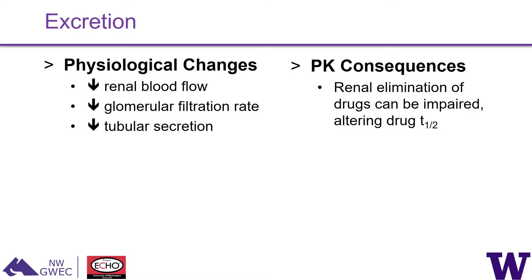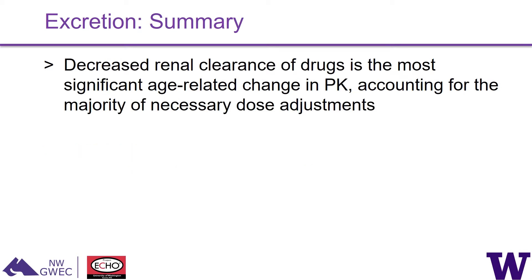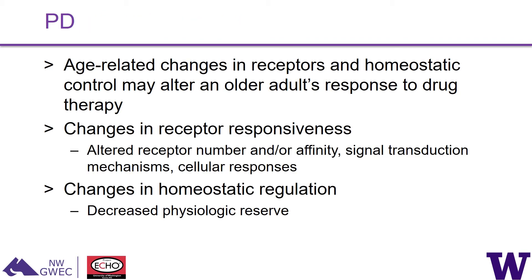Excretion is probably the most affected stage in PK. The take-home message is that renal elimination of drugs can be impaired, extending the drug's half-life — allowing it to accumulate and exert side effects. For example, digoxin's half-life is 38 to 48 hours in a healthy adult but averages 70 hours in older adults. Ranitidine dosing should be reduced in older adults with a creatinine clearance less than 50. Decreased renal clearance is the most significant age-related PK change and the one most commonly encountered in clinical practice.